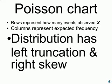The Poisson chart tends to work best when the distribution has a left truncation and right skew. In other words, zero is often our mode, and even sometimes our median, for the Poisson values.